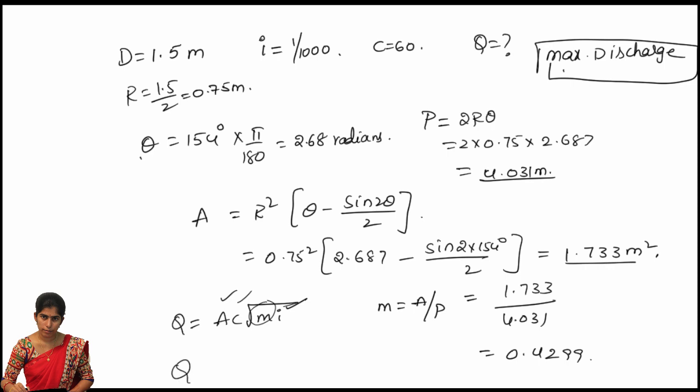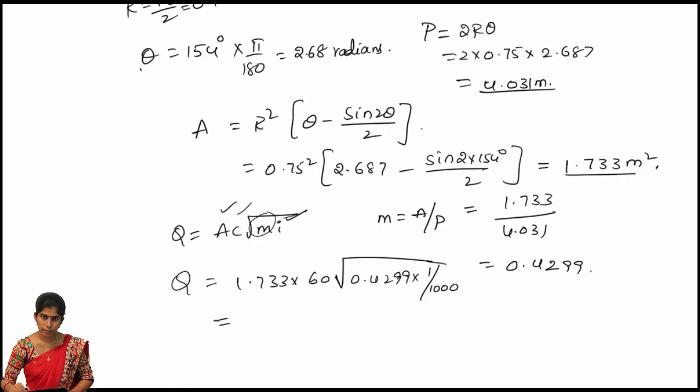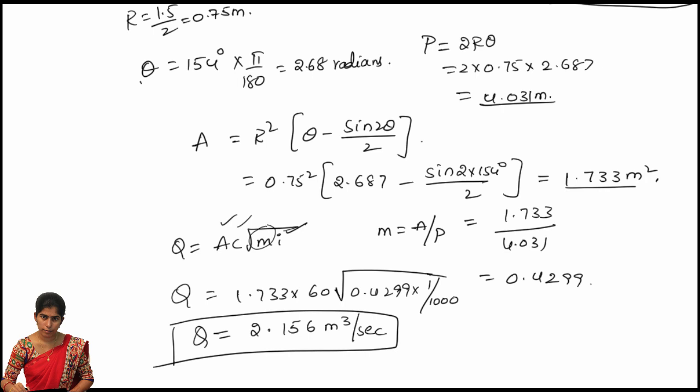So by substituting the values, Q is equal to 1.733 multiplied by 60 root of 0.4299 multiplied by I value as 1 by 1000, so that we got a value of 2.156 meter cube per second. So the total discharge Q is equal to 2.156 meter cube per second for the case of maximum discharge.